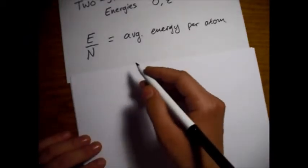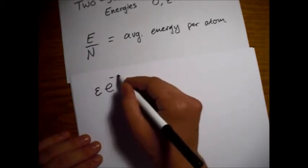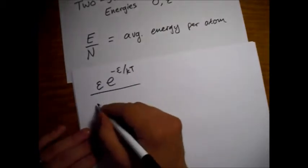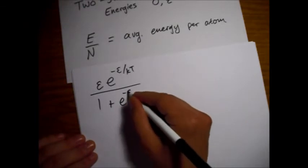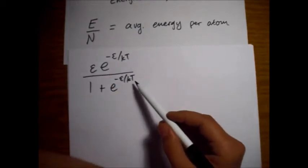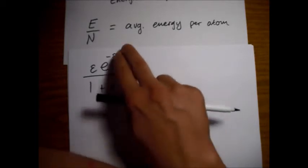When we did this, a similar thing in the canonical ensemble, we got the average energy per atom is epsilon e to the minus epsilon over kT divided by one plus e to the minus epsilon over kT. I made a video of this, I was stumbling around on the simple math and stuff. This goes to zero for very low temperatures, where these exponentials force these two terms to zero. That goes to zero.